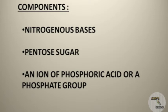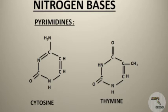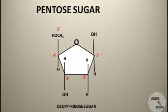A DNA molecule consists of three components: nitrogenous bases, pentose sugar, and phosphate group or ion of phosphoric acid. The nitrogenous bases having purine rings are adenine and guanine, and the nitrogenous bases having a pyrimidine ring are cytosine and thymine.